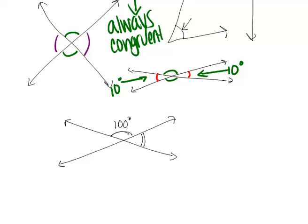Because these two angles make a straight line, they have to add up to 180 degrees. They have to be supplementary. So that means this angle has to be 80 degrees.